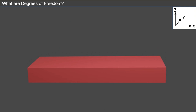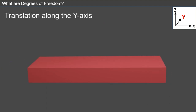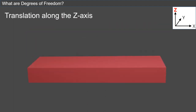Let's look at each of these three translational degrees of freedom. Translation along the X-axis is the ability of an object to move back and forth in a straight line along the X-axis. Translation along the Y-axis is the ability of an object to move forward and backward in a straight line along the Y-axis. Translation along the Z-axis is the ability of an object to move up and down in a straight line along the Z-axis.